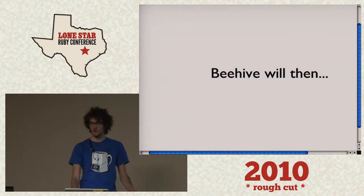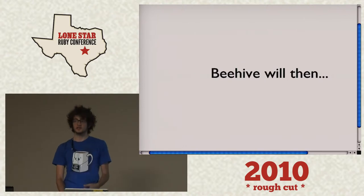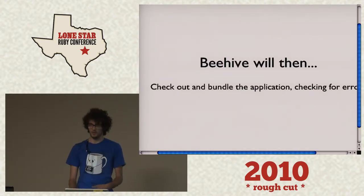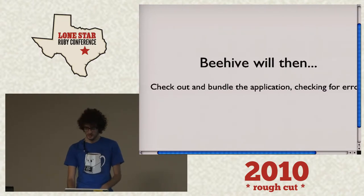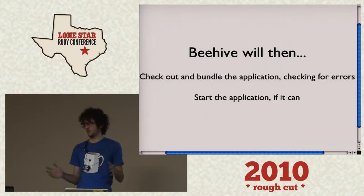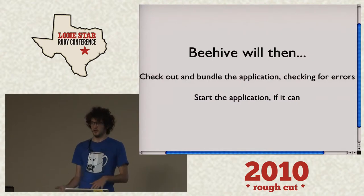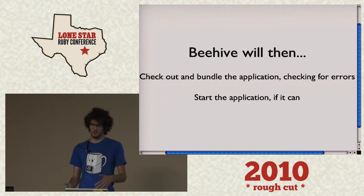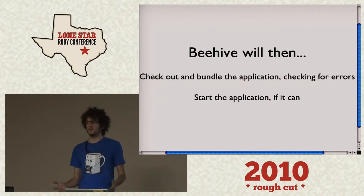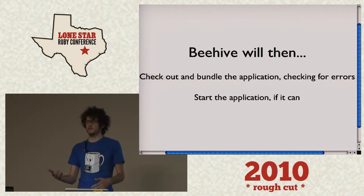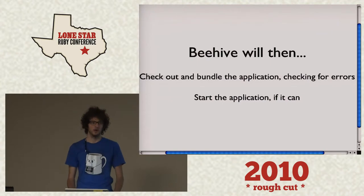So what does Beehive do then? Beehive will, if it has not already checked it out, check out and bundle the application. It'll also check for errors — every stage it checks for errors. So if it can't bundle, if it can't clone it for some reason — your public key isn't there — it won't be able to clone it, it'll fail and let you know. If you can't bundle for some odd reason, like you can't find a dependency, it will let you know.